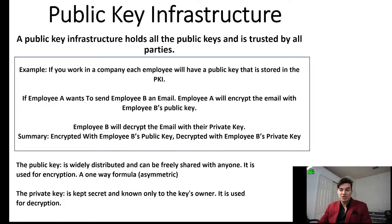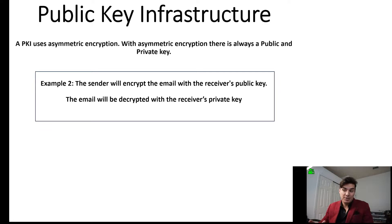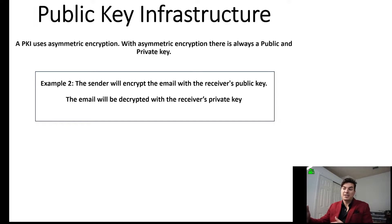The public key is widely distributed and can be freely shared with anyone. For the PKI, it's used for encryption — it's a one-way formula, or asymmetric. The private key is kept secret and known only to the key's owner, and it's used for decryption. So the sender will encrypt the email with the receiver's public key and then the email will be decrypted with the receiver's private key.